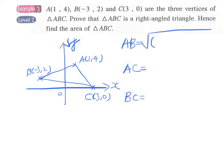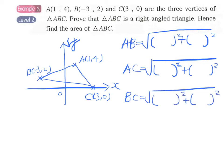And for AB, we can start with point A, that's 1, 4. And then for point B, we have negative 3, minus negative 3, we have plus 3, and then minus 2. And for AC, again we start with 1, 4. And for point C, we have 3, 0, minus 3, minus 0.